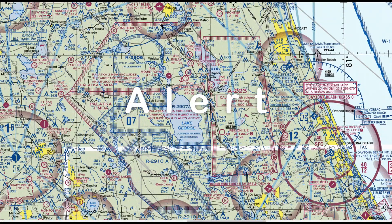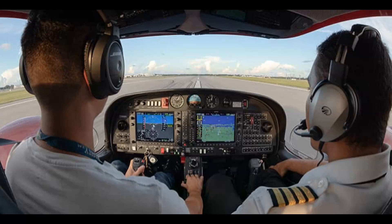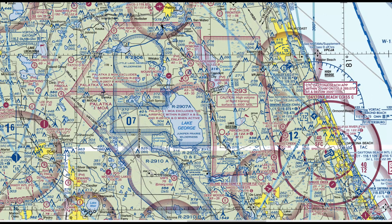Alert areas are designated with a magenta hashed outline with the A designator and a box indicating the activity. They contain activities that don't need a waiver or special permission, such as high volume of training or other unusual aerial activity. Permission is not required to enter an alert area, but additional caution is certainly advised.